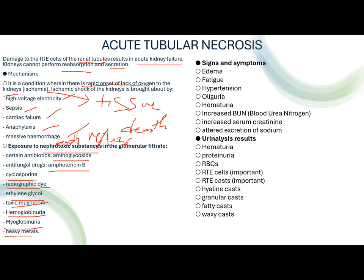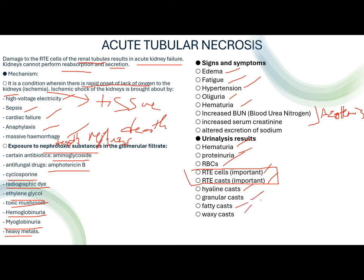Signs and symptoms of ATN include edema, fatigue, hypertension, oliguria, hematuria, increased BUN, increased creatinine (azotemia), and altered excretion of sodium. Urinalysis findings include hematuria, proteinuria, presence of RBC, RTE cells, and RTE casts — these are the defining cells/sediments for ATN. There would also be hyaline casts, granular casts, fatty casts, and waxy casts.